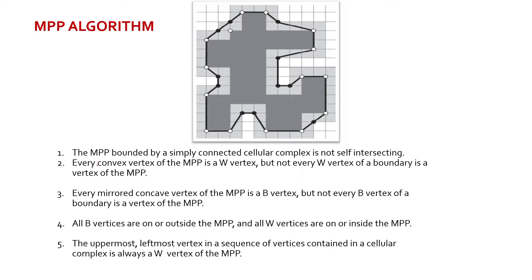Let us see the MPP algorithm. But first, we need to keep in mind a few observations. The MPP bounded by a simply connected cellular complex is not self-intersecting — that is, the boundary enclosing the original provided boundary should not intersect itself. Every convex vertex of the MPP is a W vertex, but not every W vertex of a boundary is a vertex of the MPP. We can see that this is a convex vertex of MPP and this is a white vertex, but here this white vertex is not a vertex of the MPP. Every mirrored concave vertex of MPP is a B vertex, but not every B vertex of a boundary is a vertex of the MPP.